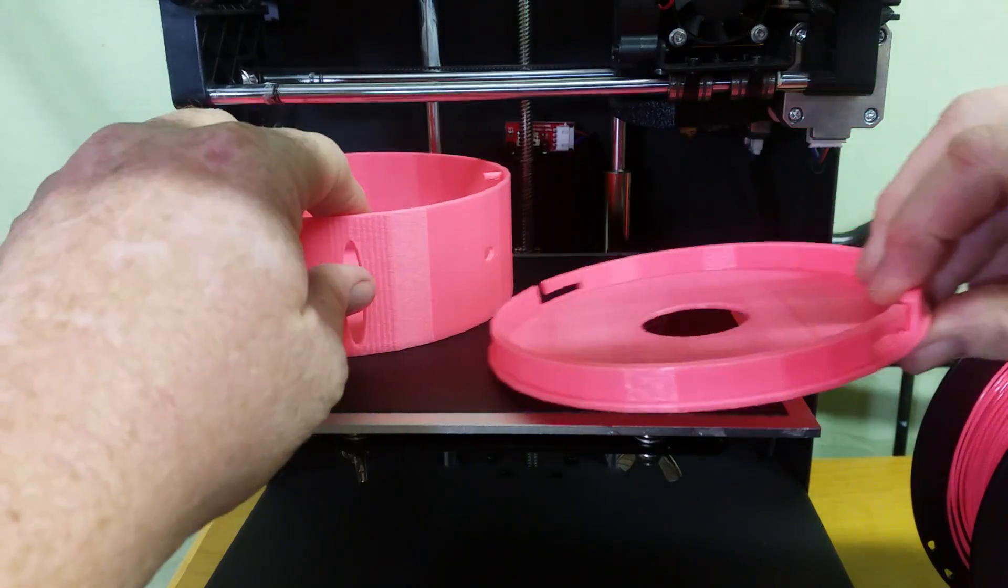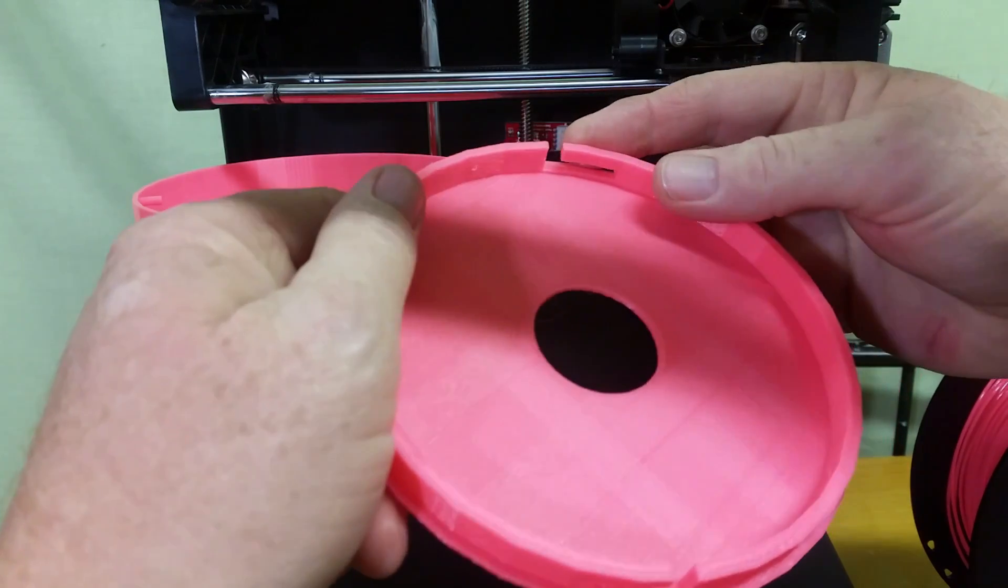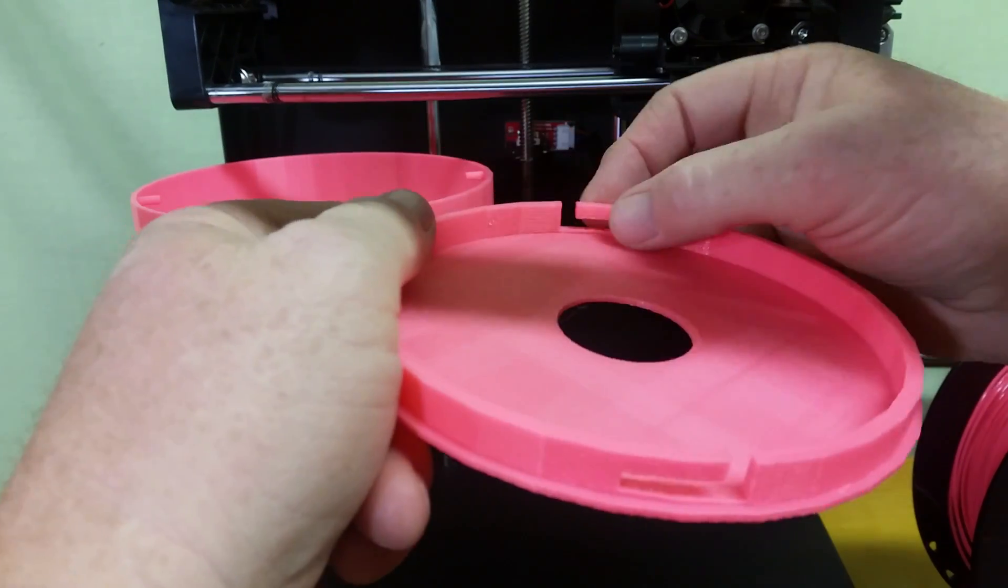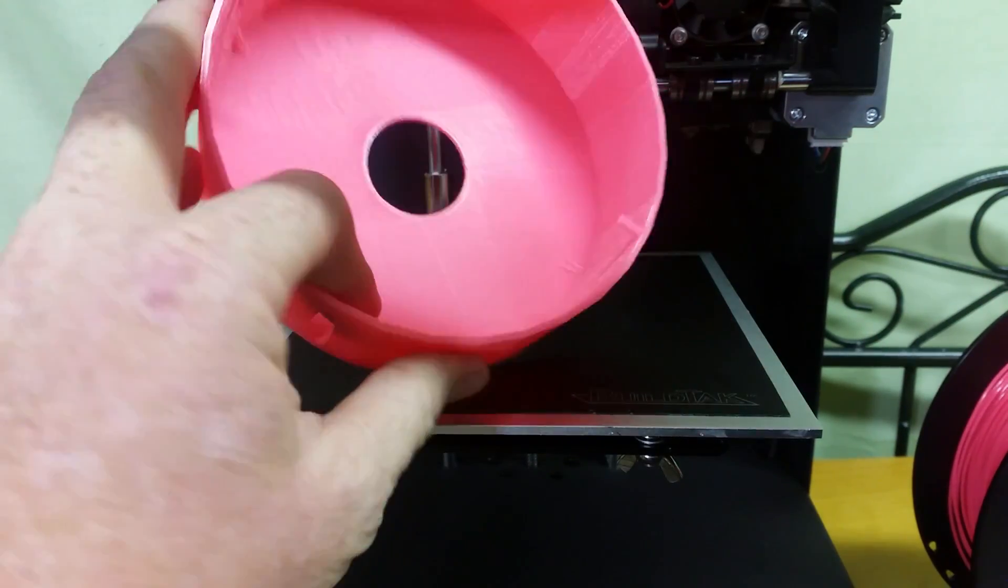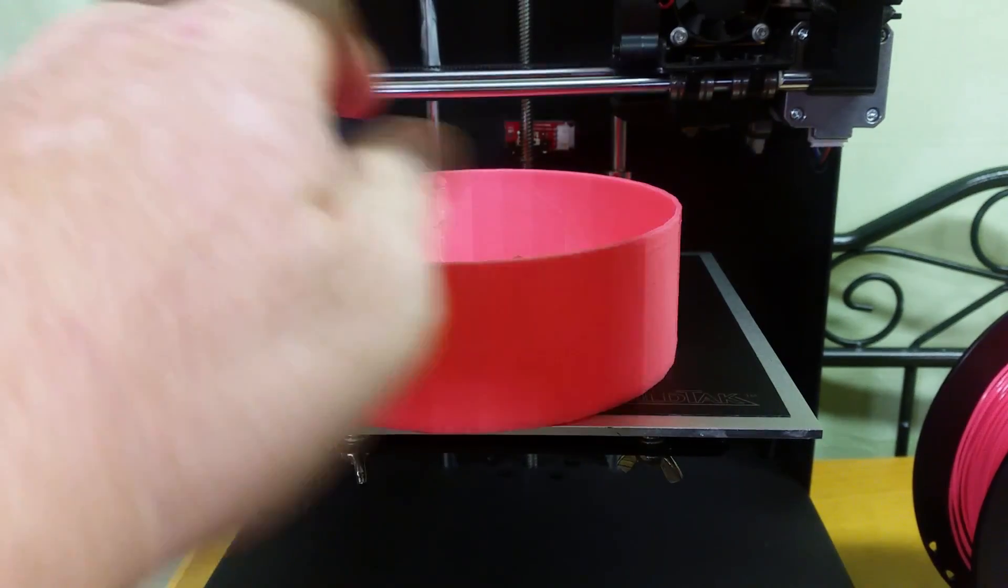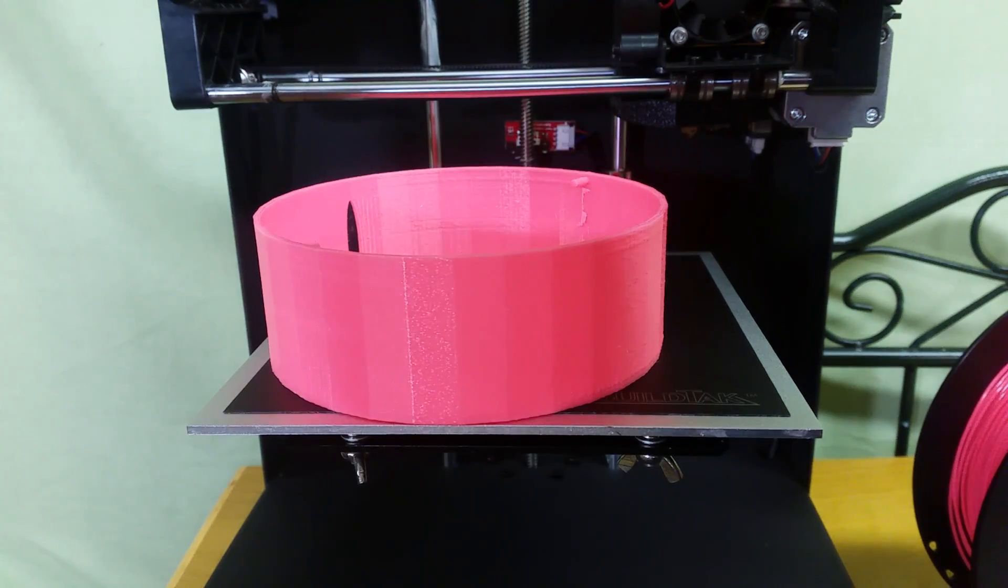And then this is the lid that just printed. And I took the support material out from underneath that piece there. And I'll show you how I envision this thing working. See if it actually pans out that way.